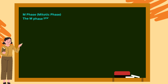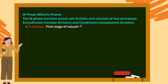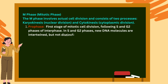Now moving to the second phase, which is M phase — the mitotic phase. The M phase involves actual cell division and consists of two processes: karyokinesis (nuclear division) and cytokinesis (cytoplasmic division). The karyokinesis stage of cell division involves four further stages.